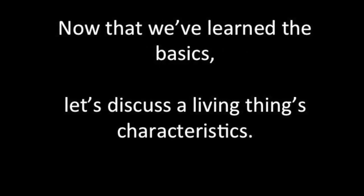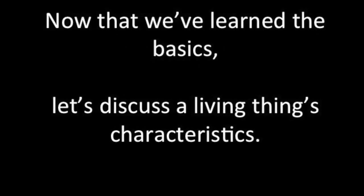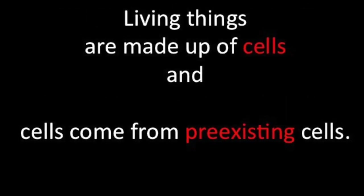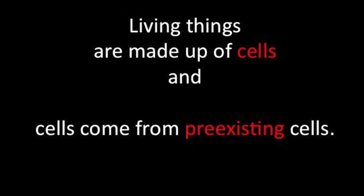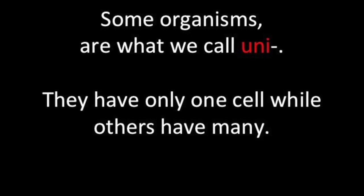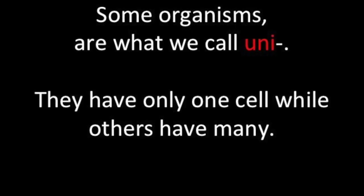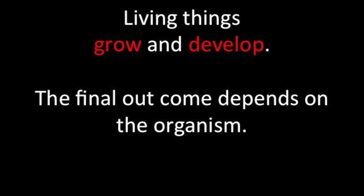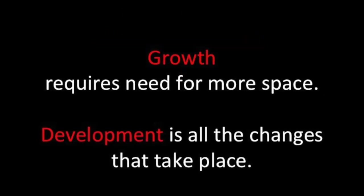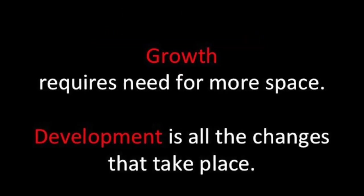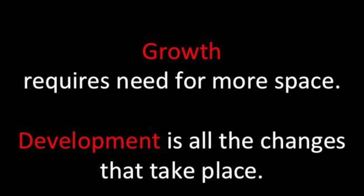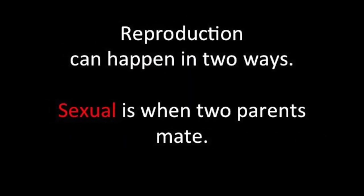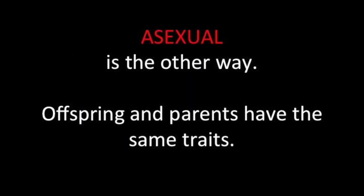Now that we learned the basics, let's discuss a living thing's characteristics. Living things are made up of cells, and cells come from pre-existing cells. Some cells are what we call uni — they only have one cell — while others have many. Living things grow and develop; the final outcome depends on the organism. Growth requires need for more space; development is the changes that take place.